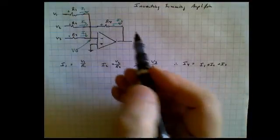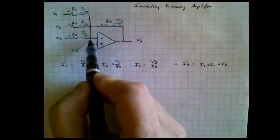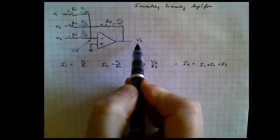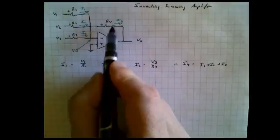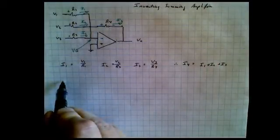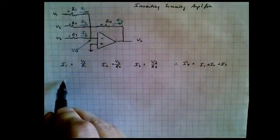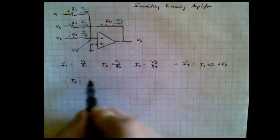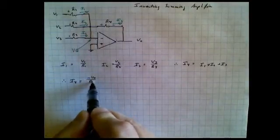But the other thing we notice is that this end of R4 is attached to the virtual ground, and this end is attached to Vout. And because the current is going in that direction, this is, in fact, negative.